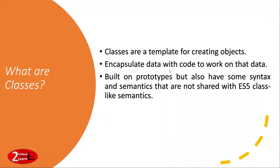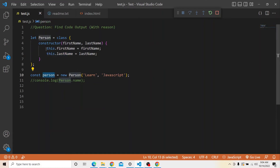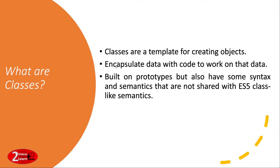What are classes? Classes are a template for creating objects, and you can encapsulate data with the code to work on that data. In our case we had two properties — firstName and lastName — which are not known to the outside world; this person object does not know what those properties are or what it is doing with those arguments. Classes are built on prototypes but also have syntax and semantics that are not shared with ES5 class-like semantics. Classes have been introduced from ES6.